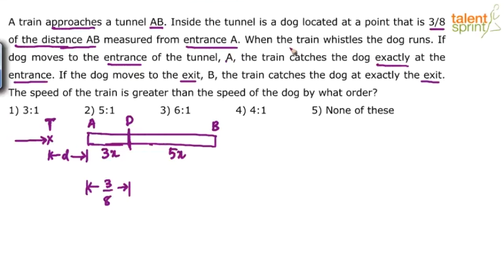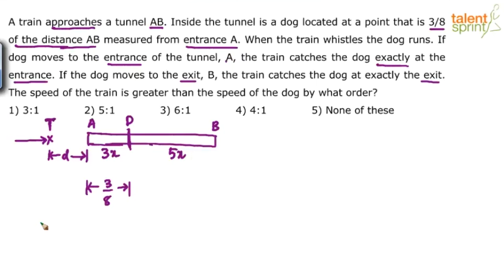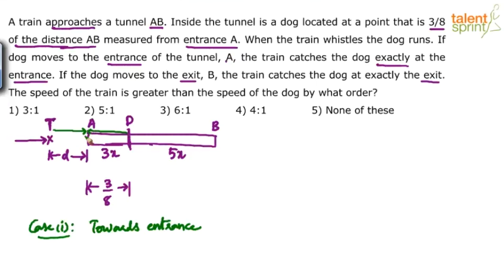There are two situations. Situation one: when the dog moves towards the entrance. The train is at some point and the dog is inside the tunnel. The train whistles and the dog starts moving towards the entrance, and they meet exactly at the entrance. The time taken by the train to reach the entrance should be equal to the time taken by the dog to reach the entrance, because the moment the train whistled, the dog started moving. Time taken by train equals time taken by dog.